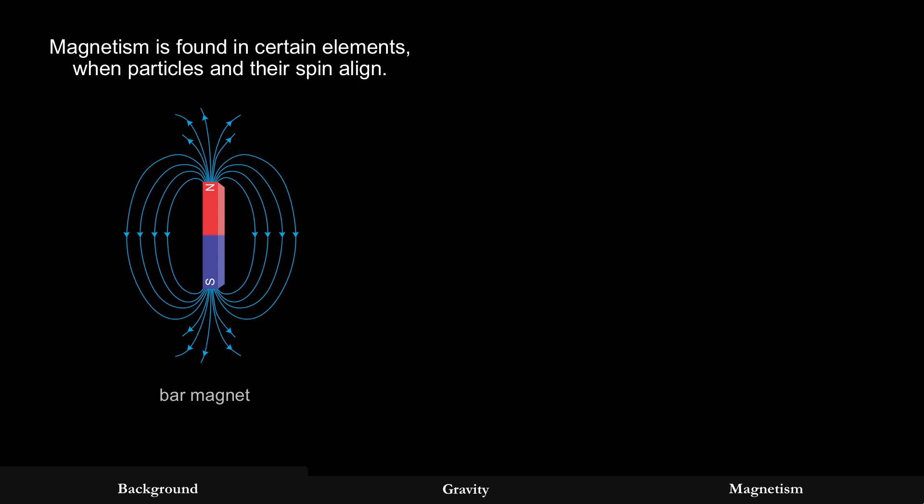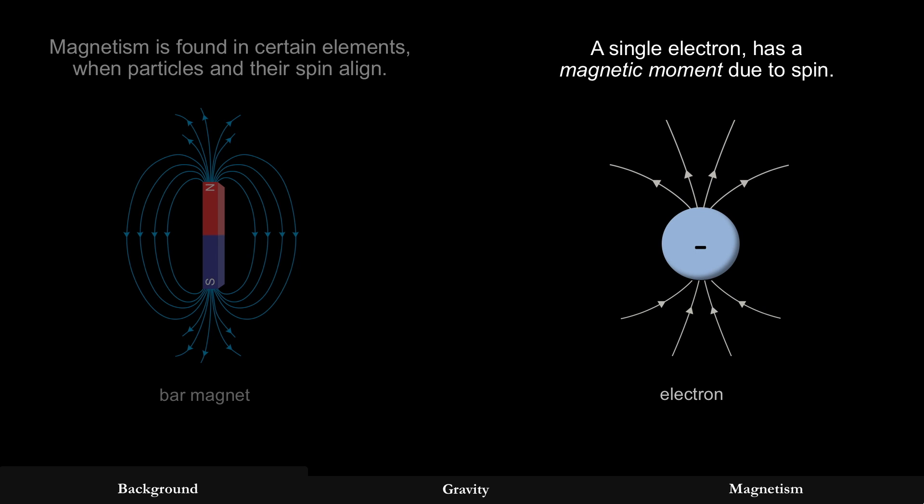And the earth has an iron core, and you can think about an iron bar magnet, but there's other elements that are also magnetic, and they're magnetic when particles and their spin align. And so here's a bar magnet with a north and south pole, and you can see the field lines that are drawn. But all that originates because of this: a single particle, like the electron, has a magnetic moment due to spin. So you can see the same magnetic field lines coming from a single particle. You align those, you get magnets, such as the bar magnet. You align it in the core of the earth, you get a magnetic field in a planet.